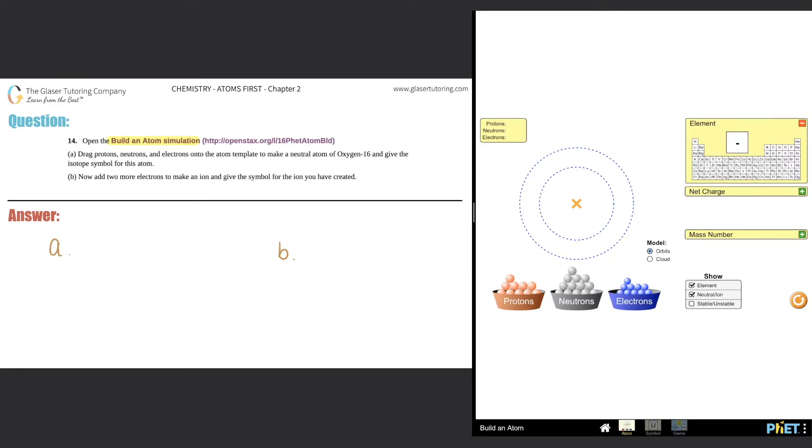Now we're here. For part A, it says drag protons, neutrons, and electrons onto the atom template to make a neutral atom of oxygen-16 and give the isotope symbol for this atom. They're telling us that we need to make oxygen-16, and they say that we want a neutral atom.